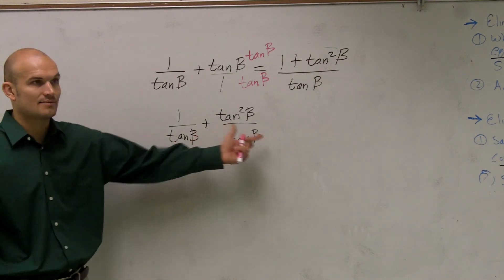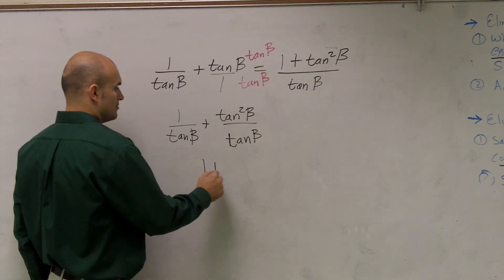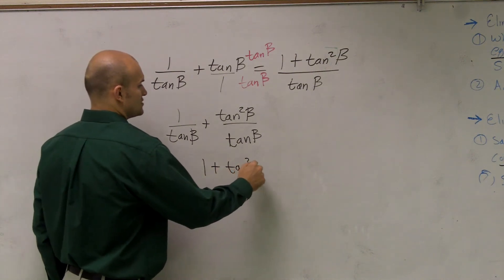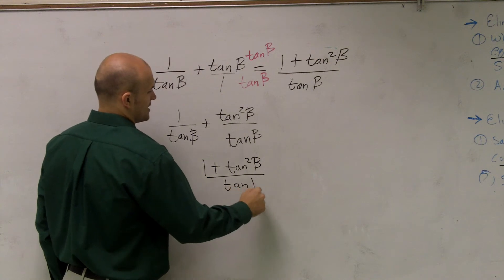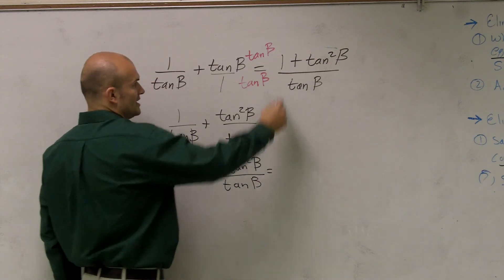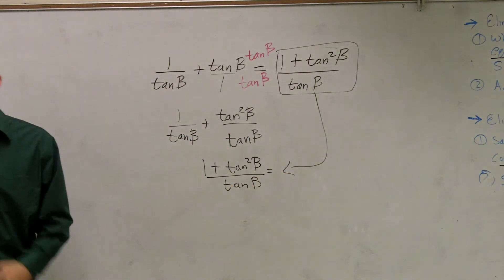Then, this one, you can easily combine them—they have the same like terms, and then the top. So, you have 1 plus tangent squared of beta, all over tangent of beta, which equals that same right side.